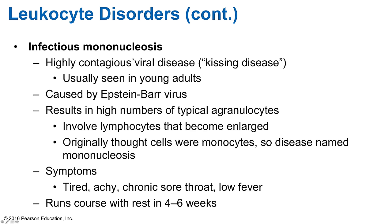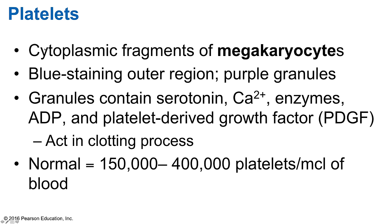Infectious mononucleosis, or mono — also known as the kissing disease — is a highly contagious viral disease caused by the Epstein-Barr virus, usually seen in young adults. It results in a high number of atypical agranulocytes; lymphocytes become enlarged and were once mistakenly thought to be monocytes, which is how the term mononucleosis arose. Symptoms include fatigue, aches, chronic sore throat, and low-grade fever. There is no cure — you must let it run its course, rest, and four to six weeks later it should resolve.